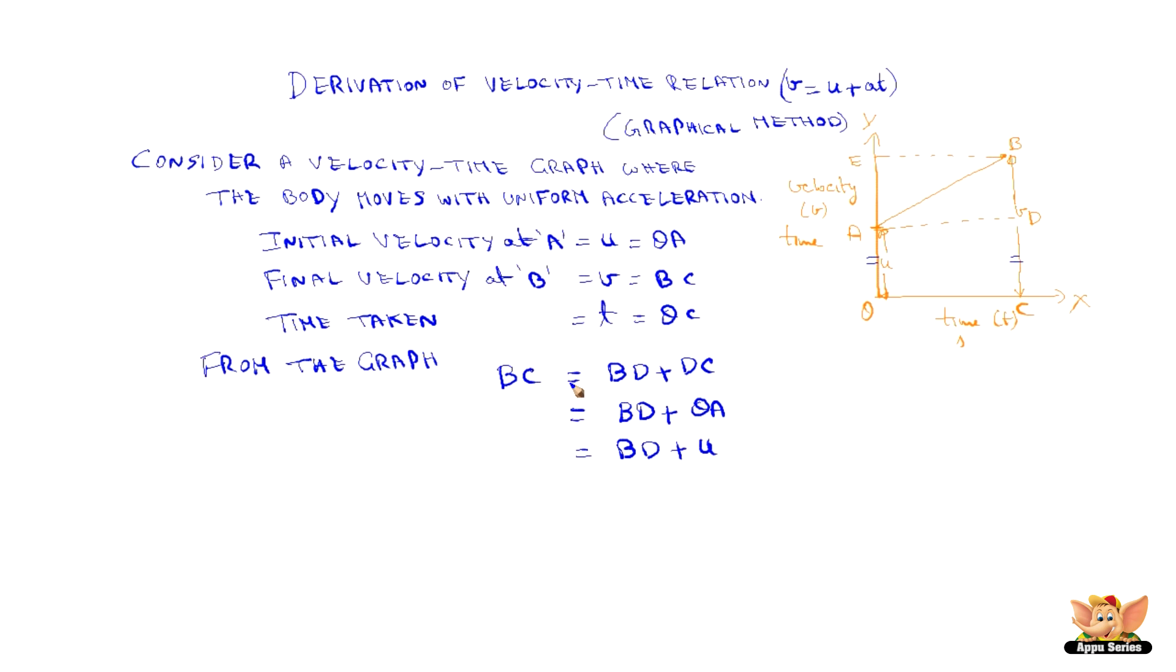Now, BC is nothing but V. So, V is equal to BD plus u. Therefore, BD is equal to V minus u. This is equation 1.